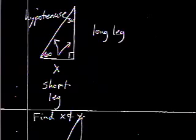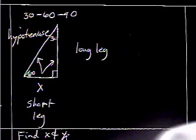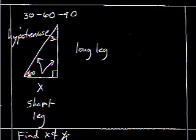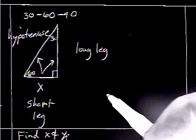What happens if it's a 30-60-90 right triangle? The 30-60-90 right triangle has a short leg, a long leg, and a hypotenuse. Obviously, the long leg is opposite the 60-degree angle, and the short leg is opposite the 30-degree angle.